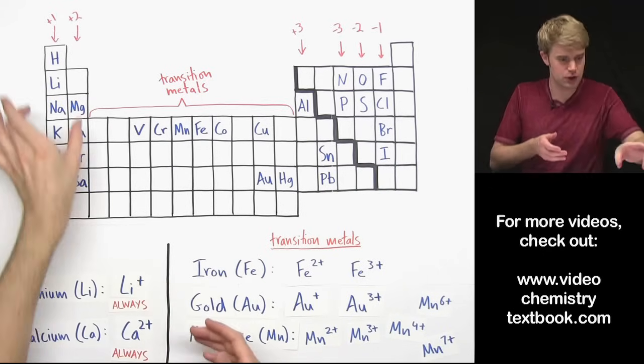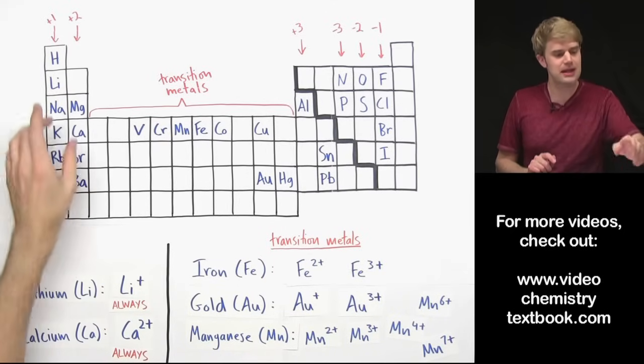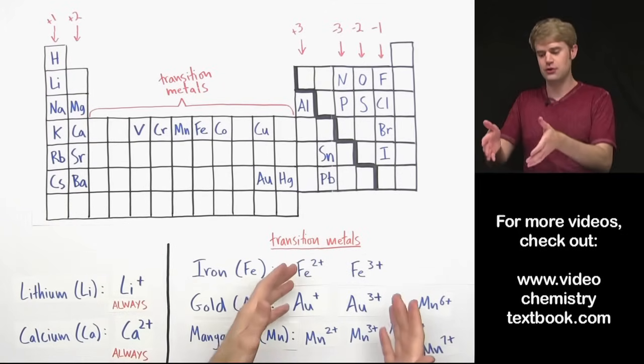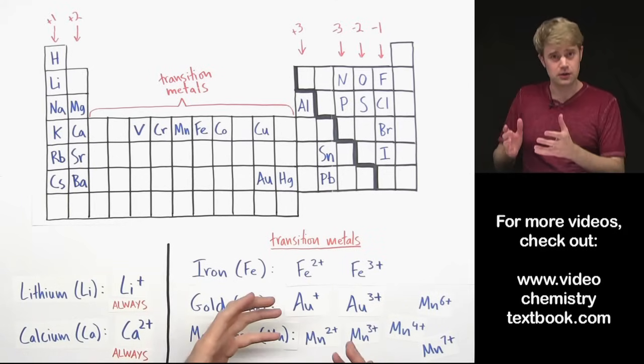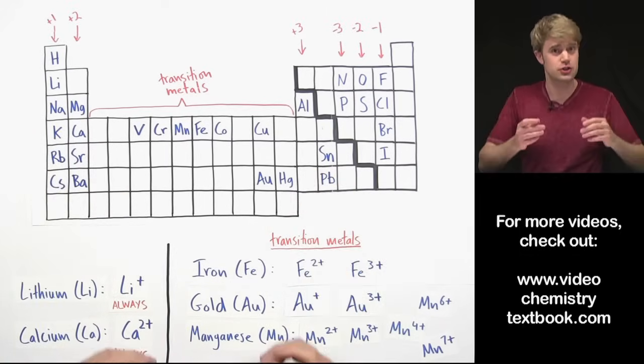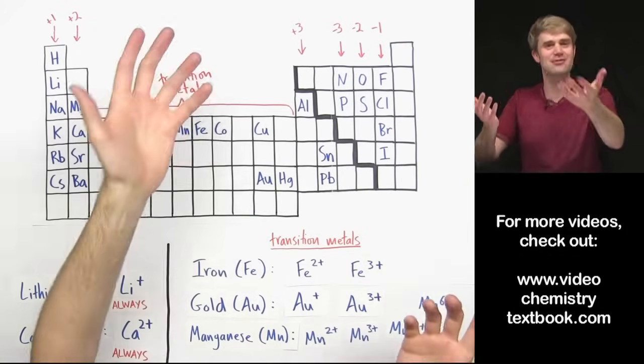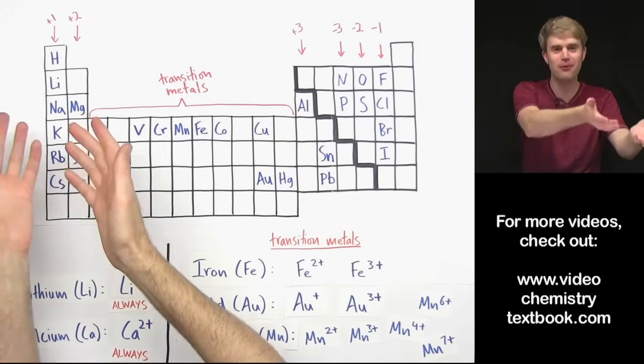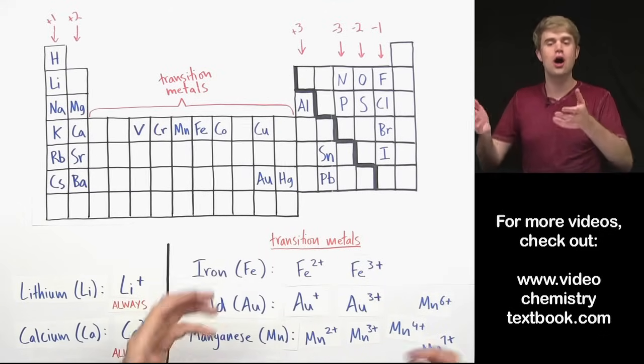This is different from the metals over here and from other types of elements on the periodic table, which tend to always make the same type of element based on what column they're in. Now sometimes people ask, why is it that the transition metals are able to make this wide variety of ions? And the answer is kind of complicated. But basically, it has to do with the way electrons are arranged in the orbitals of the transition metals. Essentially, the transition metals are more loosey-goosey with the electrons that they give away. They're not set on giving just one away or two away. They can give a couple away. They can give a couple more away. And so that's how you end up with these ions that have varying numbers, varying amounts of positive charge.